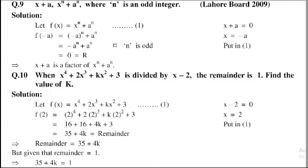Question number 9: x plus a, x power n plus a power n where n is an odd integer. First of all, let's suppose f of x equal to x power n plus a power n, that is equation number 1.